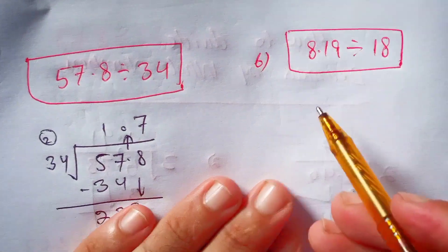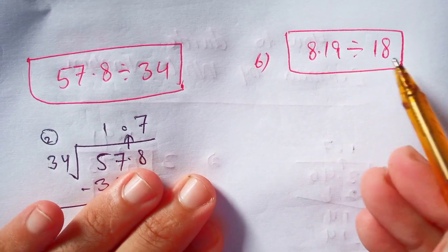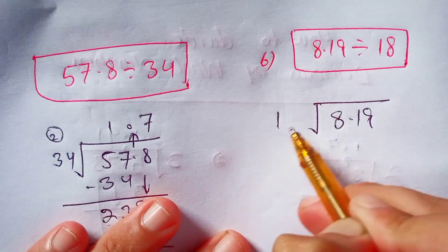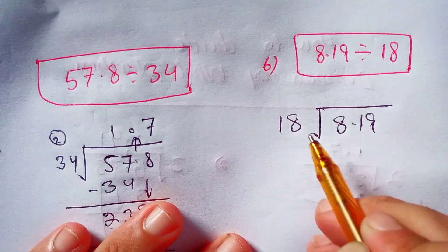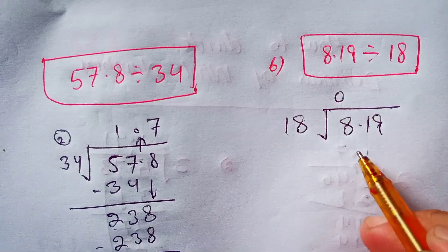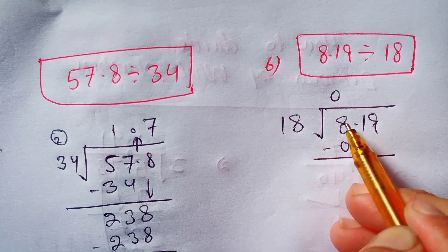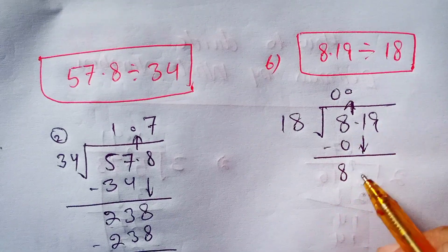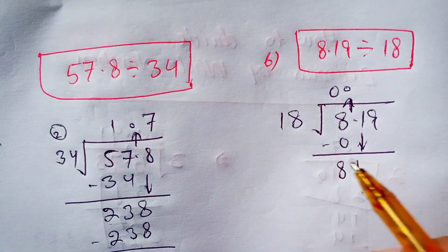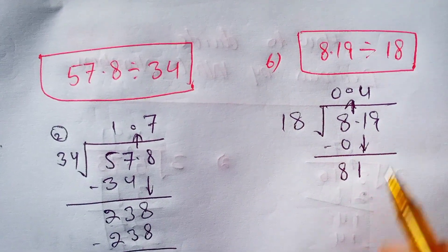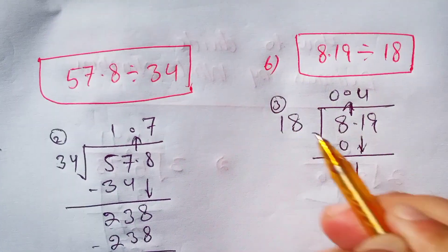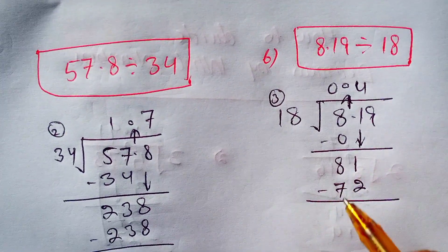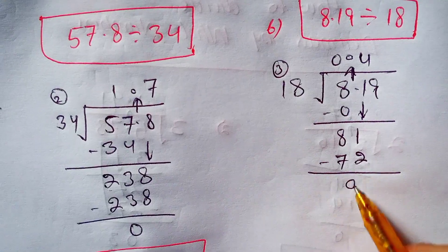Now here is another example: 8.19 divided by 18. 18 times 0 is 0. Subtract 0 from 8, the remainder is 8. Carry the decimal point to the quotient and bring down the 1 near 8 to make it 81. 4 times 8 is 32, write 2 and carry 3. 4 times 1 is 4 plus 3 is 7. Subtract 72 from 81, the remainder is 9.